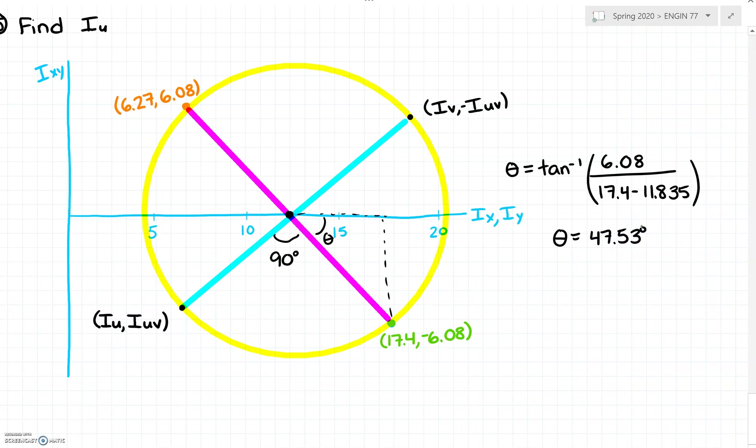We can use 90 degrees and theta to find this angle here, let's call that alpha. So alpha is going to be 180 minus theta minus 90. That will be 42.46 degrees.